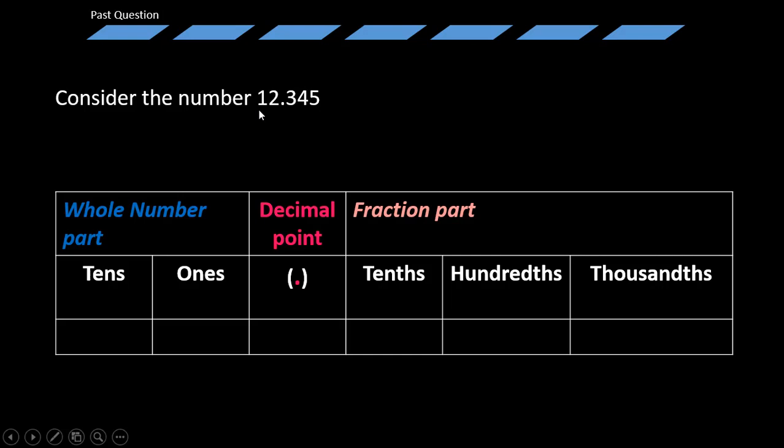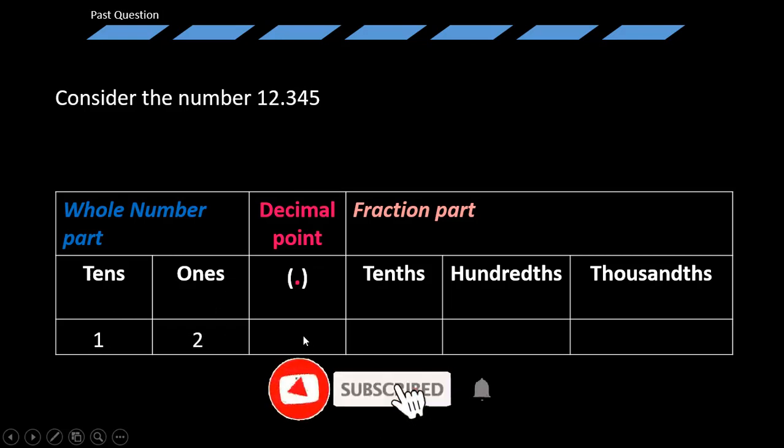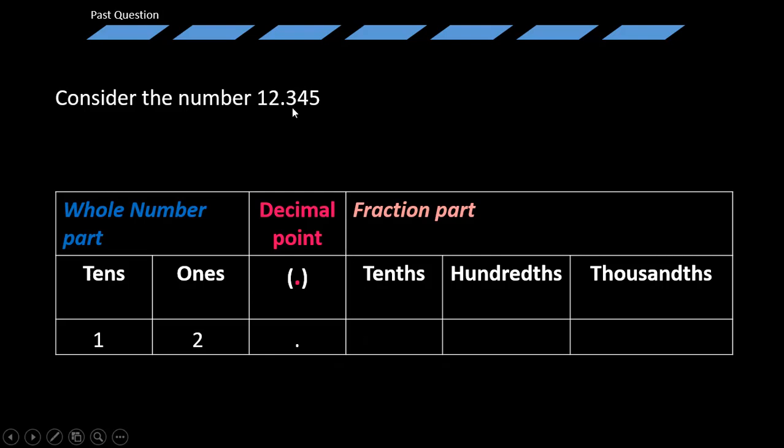In other words, the 1 goes to the tens place. And of course, the 2 here goes to where? The ones place. We can simply introduce our decimal point. And then from there, the rest of the number simply represents a fraction part. All right?